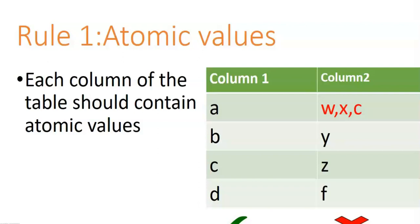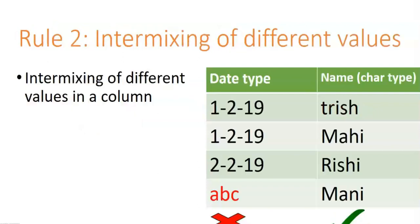Rule one of first normal form says that each and every value of a column must be atomic, meaning any cell of the table would not contain multiple values. In column one, each cell contains only a single value — those are atomic values. In column two, the first cell contains 'w', 'x', 'c' — multiple values in one cell — which is not allowed. A column should not contain multiple values.